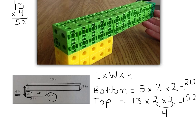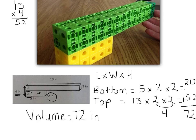Now that I have those two numbers, I can add them together. 0 plus 2 is 2, 2 plus 5 is 7. So my volume for this prism would be 72 inches cubed.